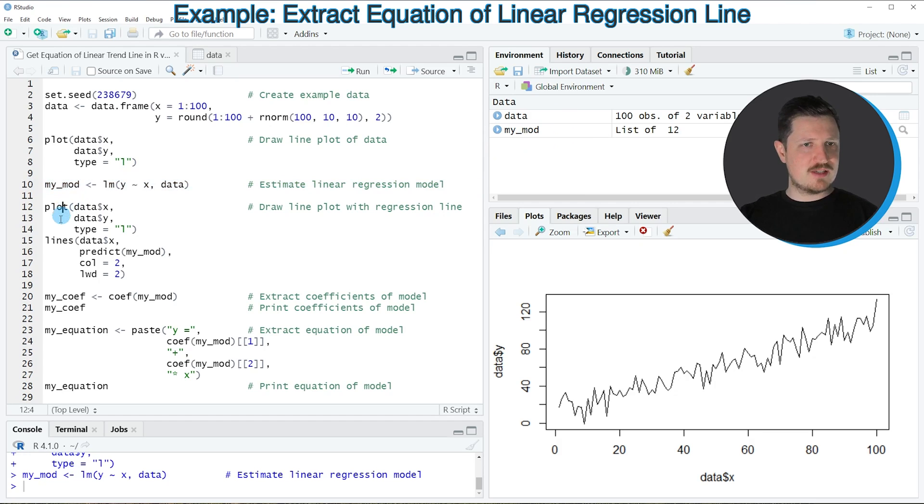Now in the next step we can draw this regression line on top of our plot as you can see in lines 12 to 18. In lines 12 to 14 I'm recreating our plot without trend line, and then in lines 15 to 18 I'm using the lines function and the predict function to draw the trend line on top of our line plot. If you run these lines of code, you can see at the bottom right that a red trend line has been added to our plot.